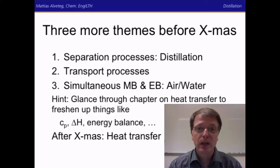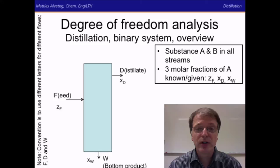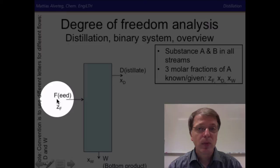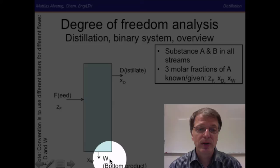To link back to the first part of the course, we will begin by doing a degree of freedom analysis for the distillation setup. In the distillation setup we separate a feed into a distillate and the bottom product flow. The convention is to use different letters for different flows: F denotes the molar flow rate in the feed, D the molar flow rate in the distillate, and W the molar flow rate in the bottom product.